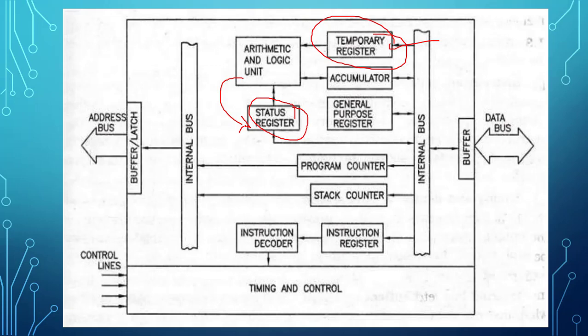Now coming to general purpose register. General purpose register friends consists of multiple registers and it can basically store both, that is you can store your data or your address.